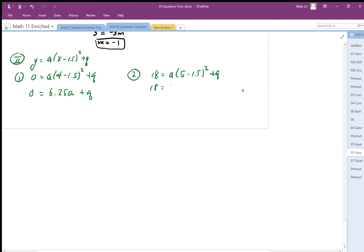3.5 squared is going to be, 3.5 times 3.5, I think it's going to be 12.25a plus q.